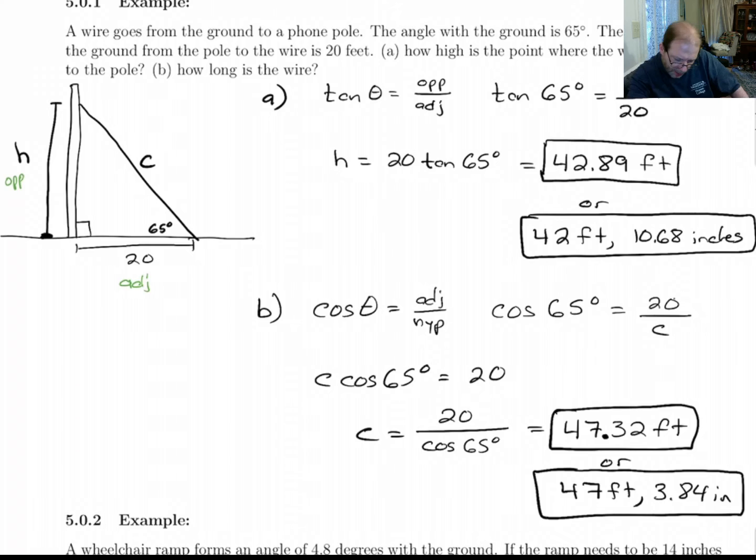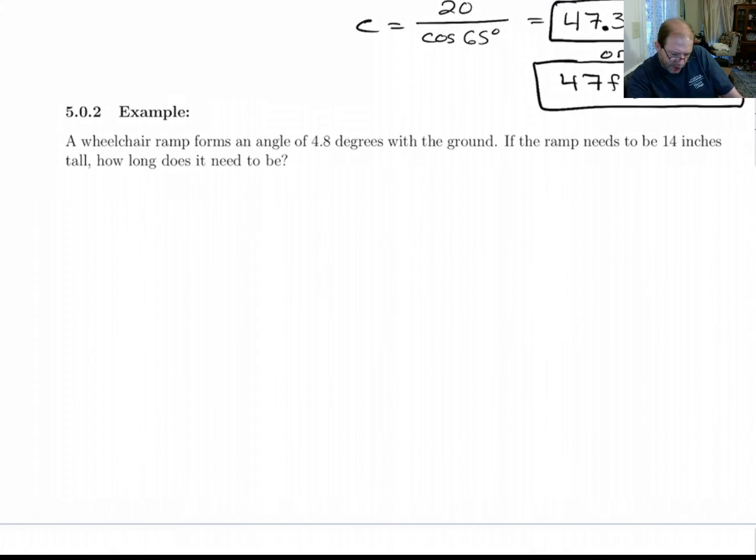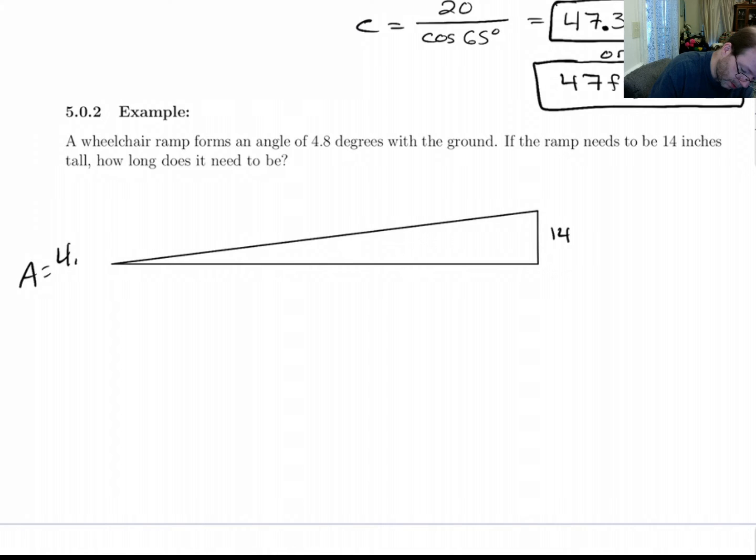Okay. Let's do one more problem. This one. A wheelchair ramp forms an angle of 4.8 degrees with the ground. If the ramp needs to be 14 inches tall, how long does it need to be? Alright. So we've got a really long triangle here. This is supposed to be 14 inches. And the angle inside of here is 4.8 degrees. Alright. So we're asking how long does the ramp need to be? And that's maybe kind of an ambiguous question because are we talking about the length along the hypotenuse or are we talking about the length along the ground?